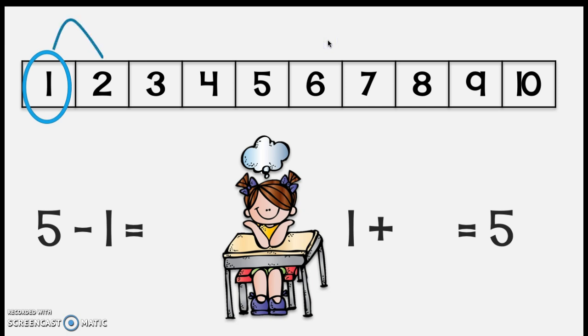One, two, three, four, five. All right do you remember what I do now that I got to 5? Yeah I'm going to count my jumps. Count my jumps with me. One, two, three, four. So that means 1 plus 4 is equal to 5. And if 1 plus 4 is equal to 5 then 5 minus 1 is also going to be equal to 4.